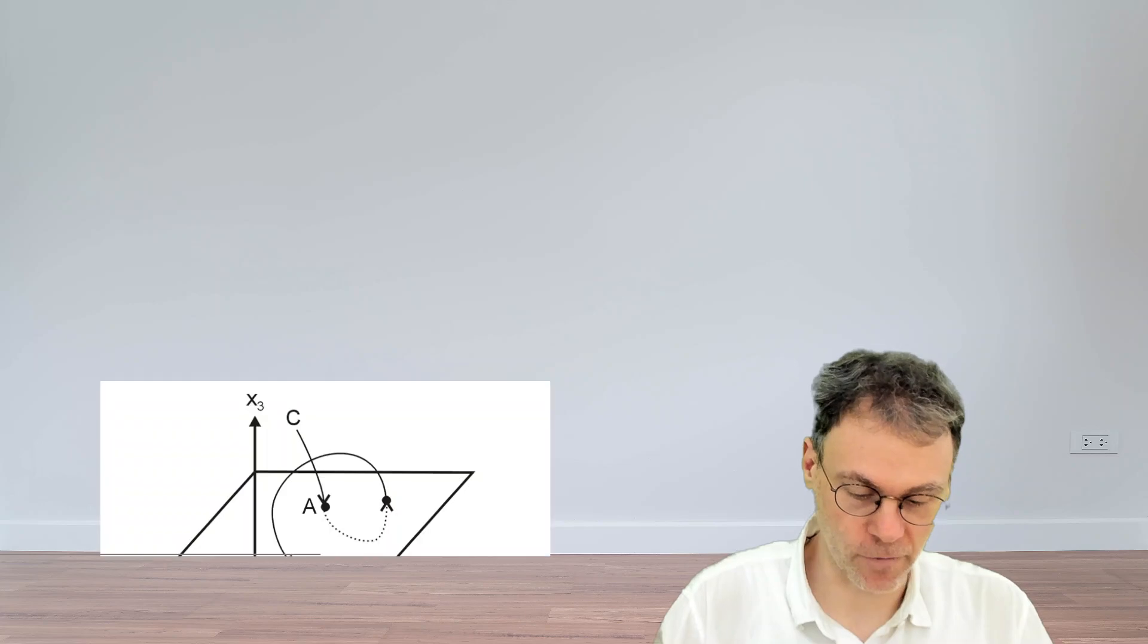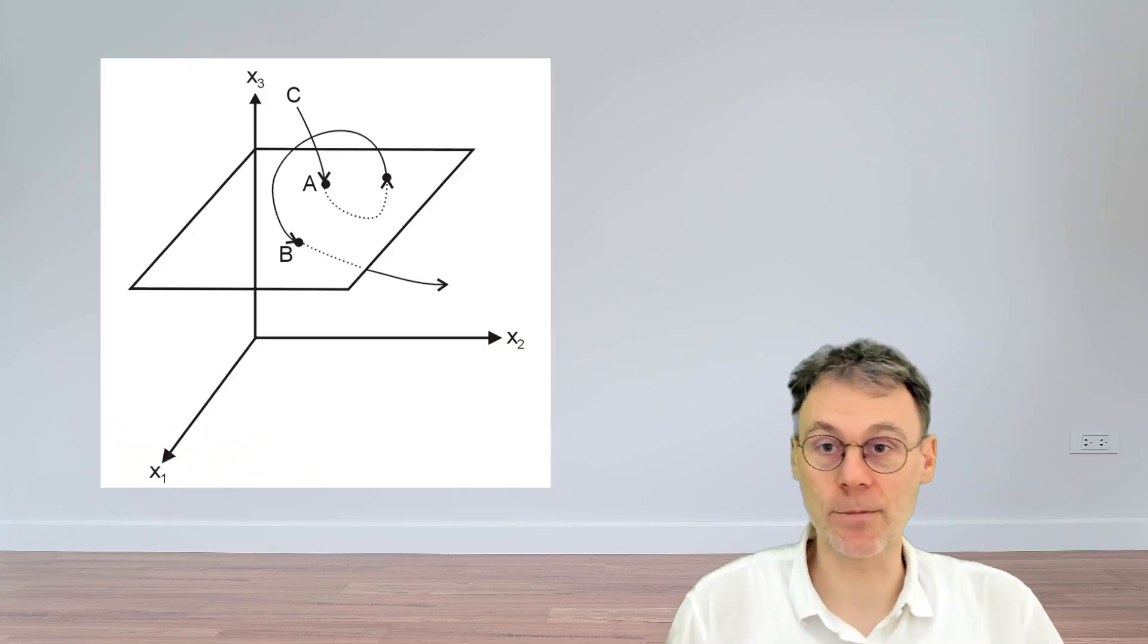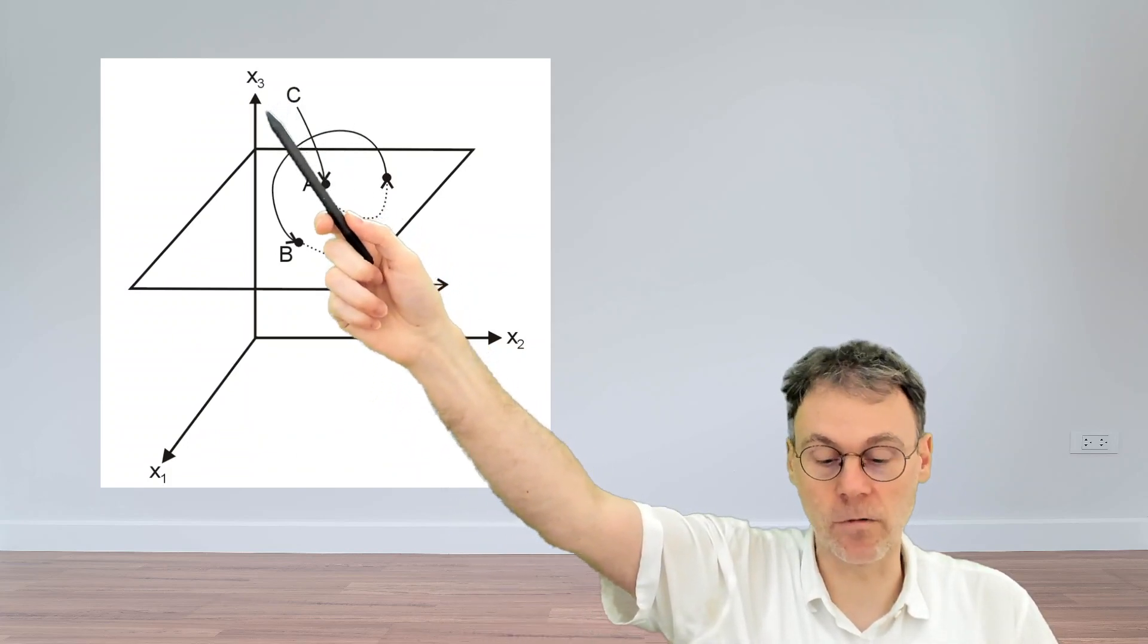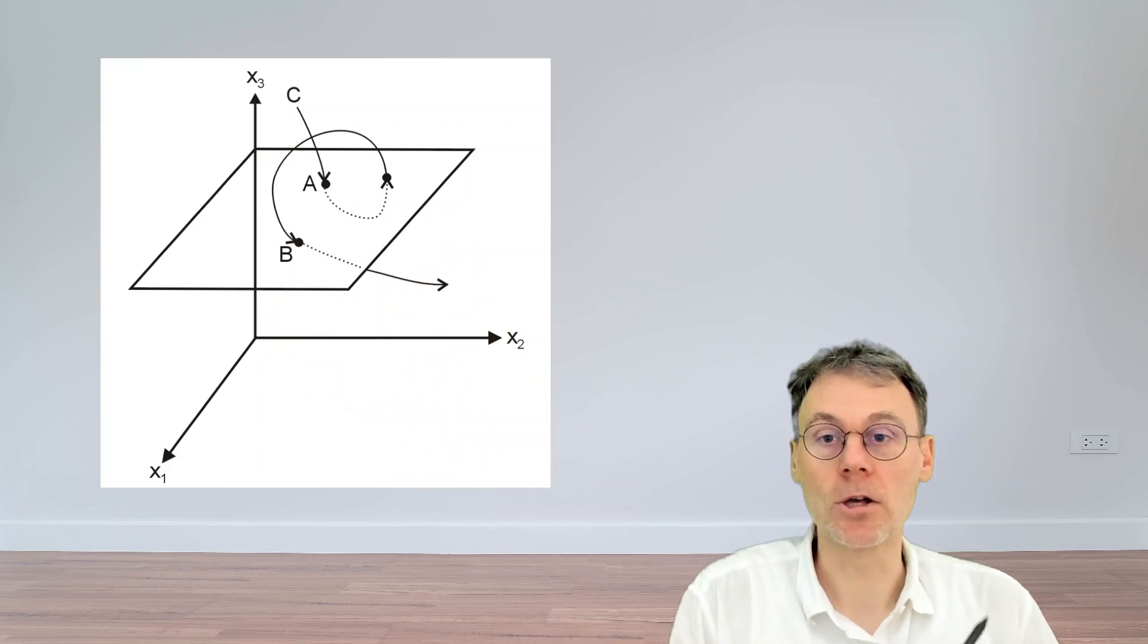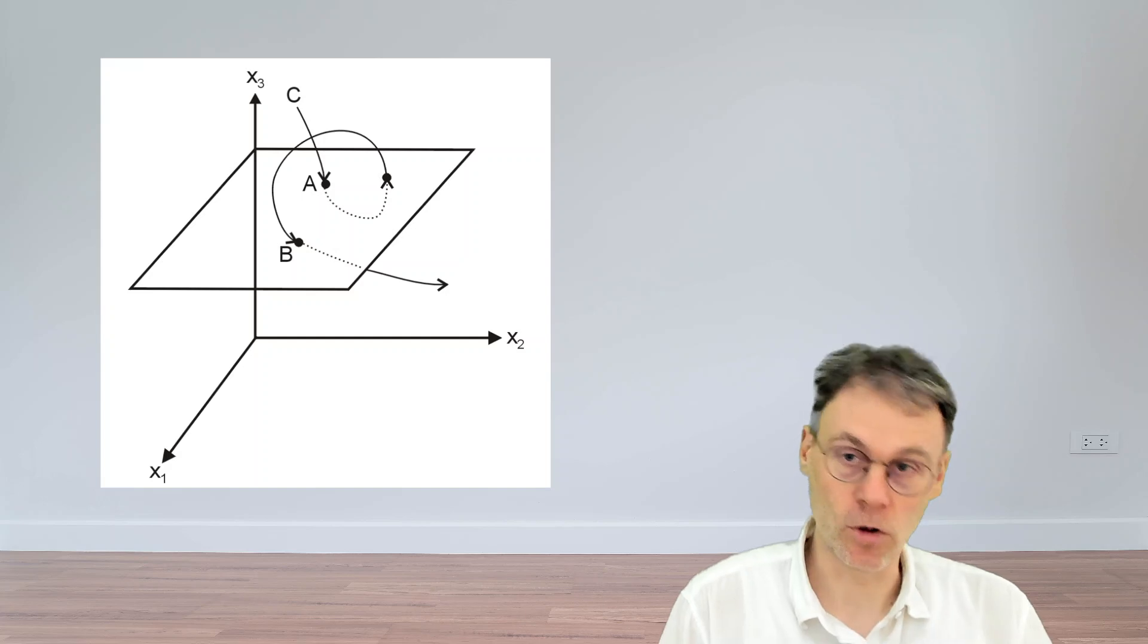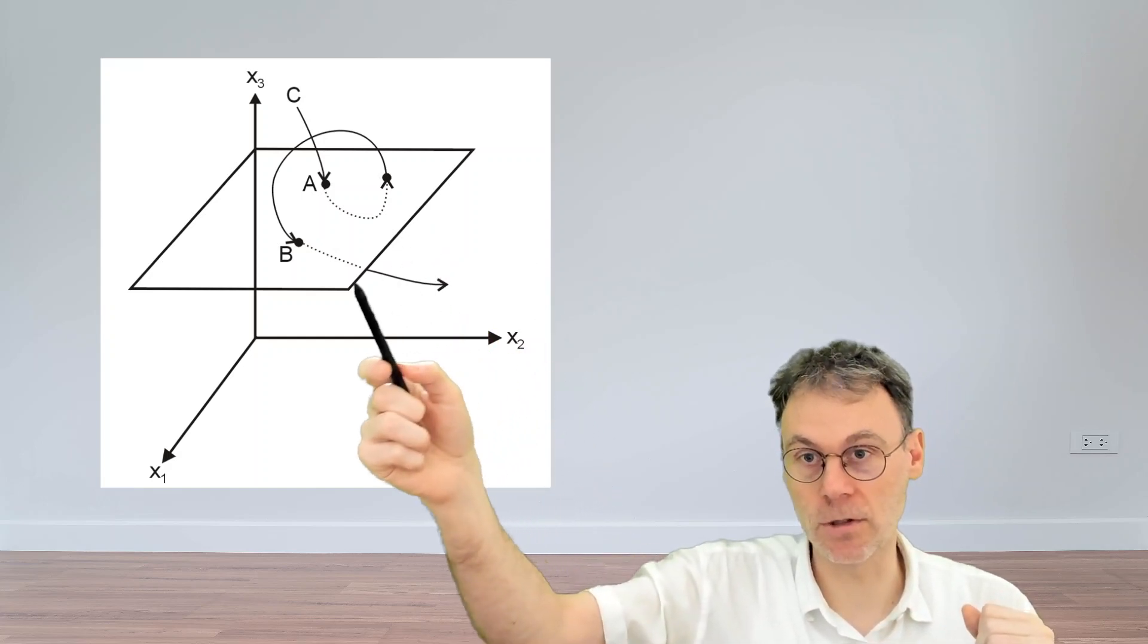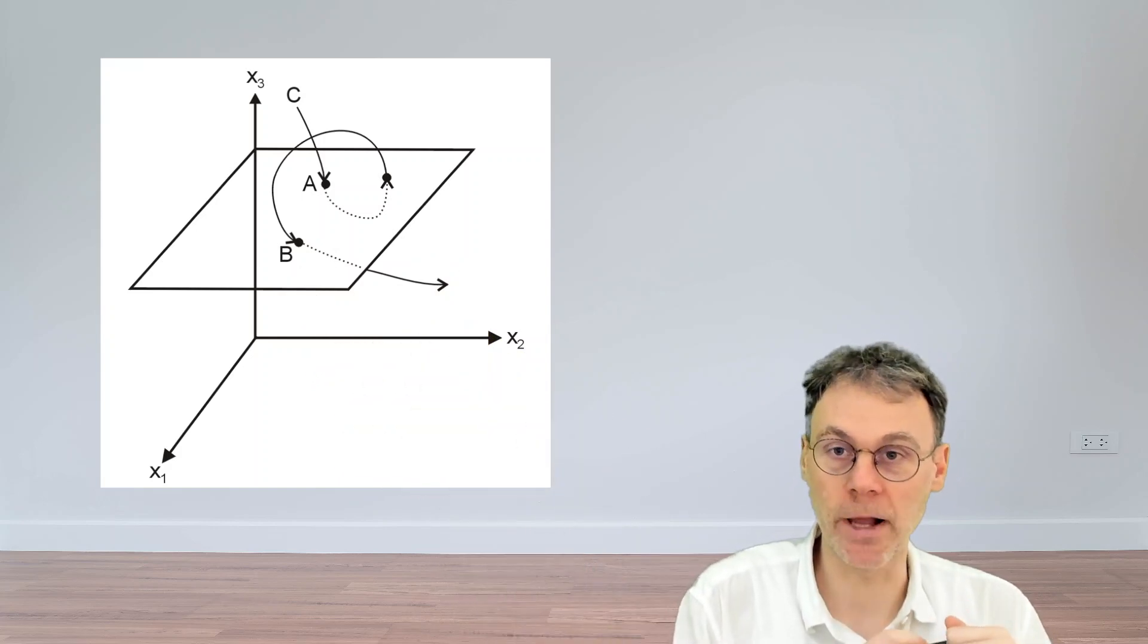Say you have a continuous time system which evolves in three dimensions. And if you have an initial condition over here, it describes this particular path. So what you're going to do is you're going to look at one dimension lower. So in our case, this is going from a space to this plane here. And you're going to look at when this trajectory pierces this plane, but only in certain directions.